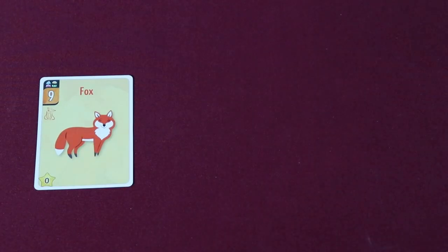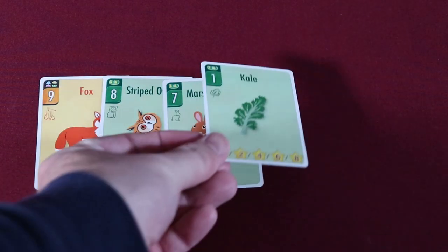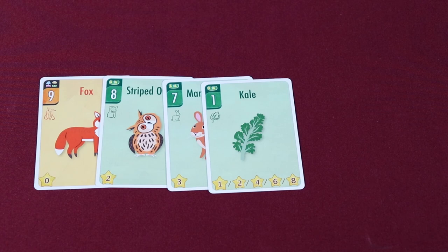Fox is at the top of the food chain, followed by Owls, then Rabbits, and finally Kale. These cards all interact with each other in unique ways.